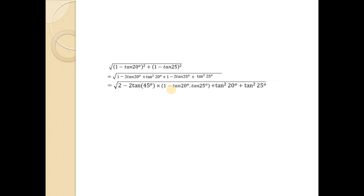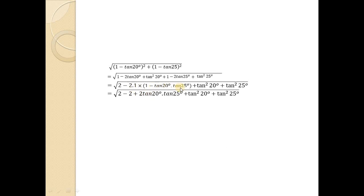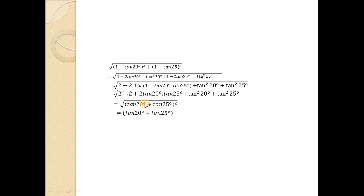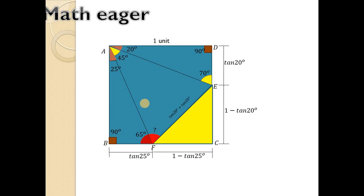Now 20° plus 25° means tan(45°), which equals 1. And 2 into 1 is 2. So multiplying, we get 2 into (1 minus 2·tan20°·tan25°) which, after the 2s cancel, gives us the remaining term in the form (tan20° + tan25°)² — a perfect square. The square root cancels, leaving EF equals tan(20°) plus tan(25°).